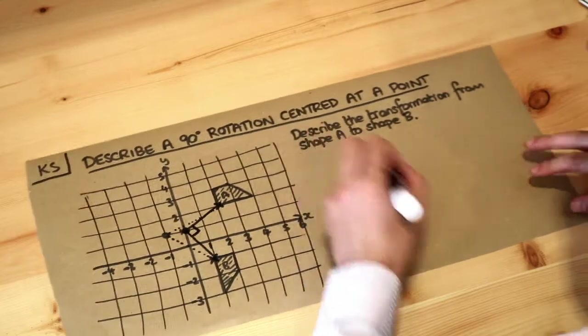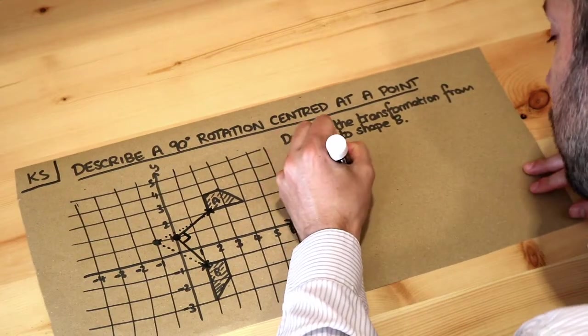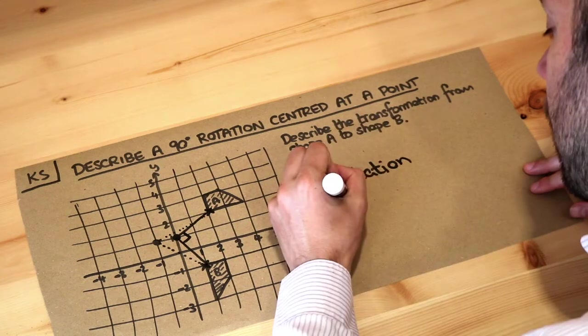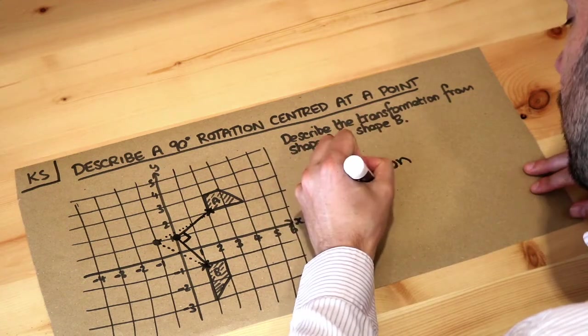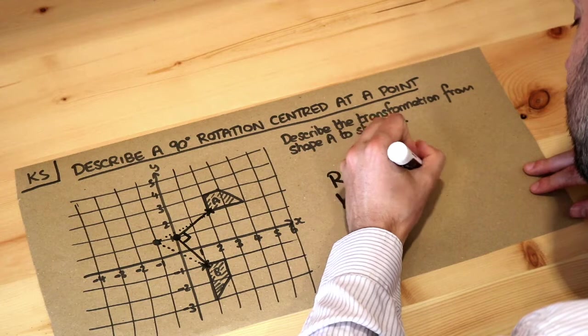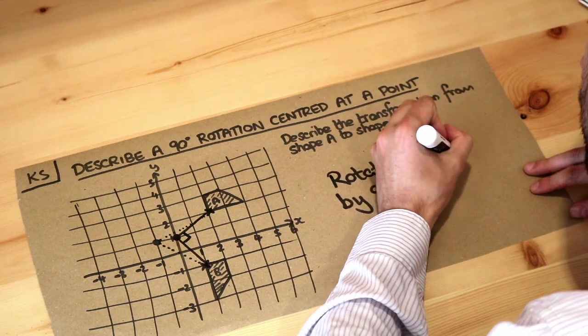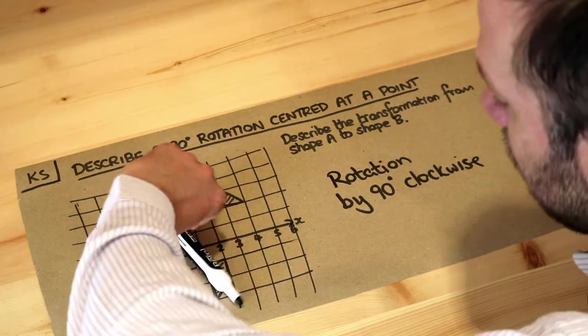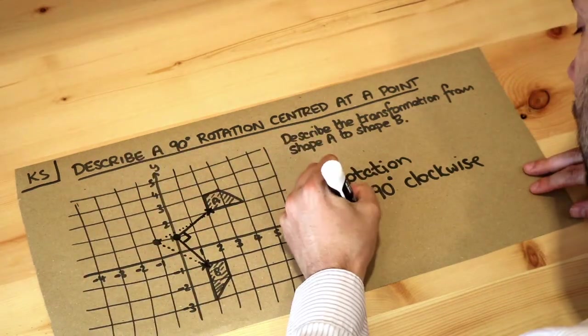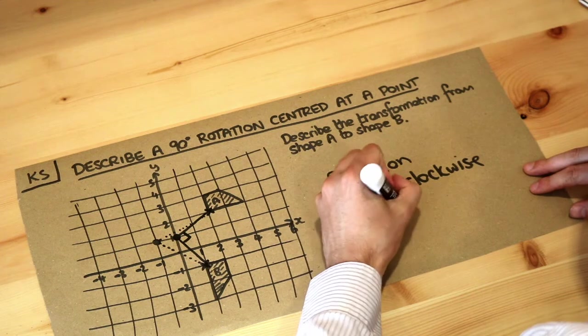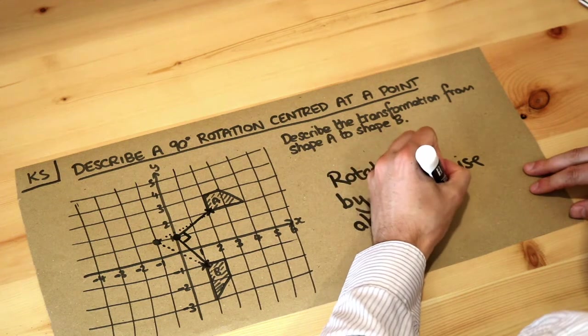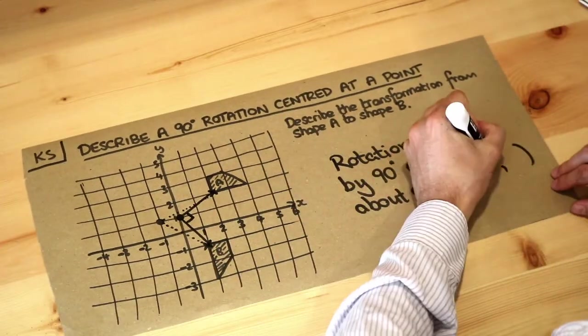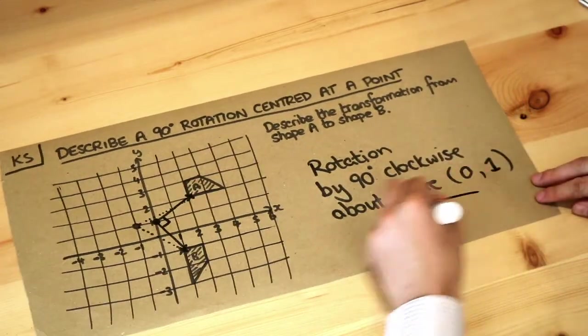So there we go, we can now describe it. It's a rotation, so we need to say it's rotation and not reflection or translation or whatever, and we can say it's by 90 degrees clockwise, because it's rotating a half spin 90 degrees and it's going in the direction of a clock, so clockwise. And then we need to say the center, about the center, and then read off the coordinate, put it in brackets, so that's the point (0,1), and that's the final answer.